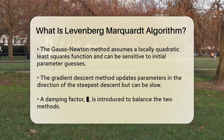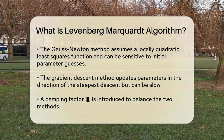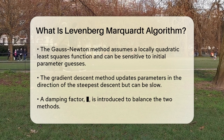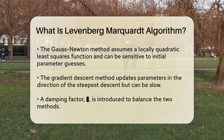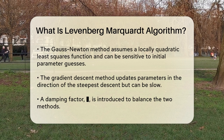This algorithm combines two other methods: the Gauss-Newton method and the gradient descent method. The Gauss-Newton method assumes the least squares function is locally quadratic and finds the minimum of this quadratic. However, it can be sensitive to the initial guess of the parameters. On the other hand, the gradient descent method updates the parameters in the direction of the steepest descent, but it can be slow.